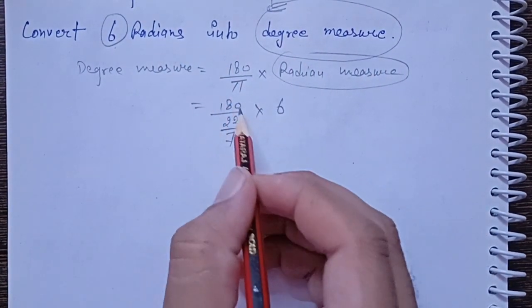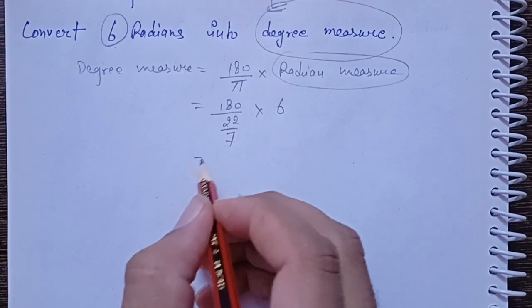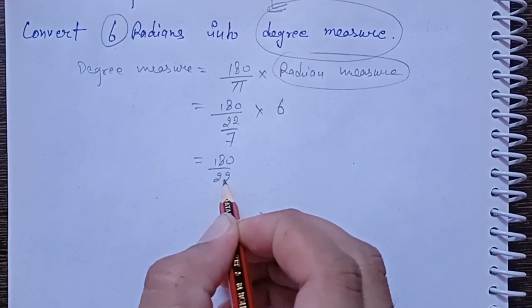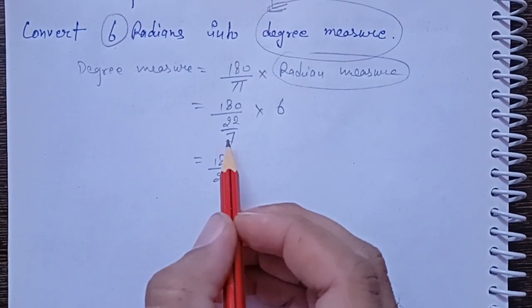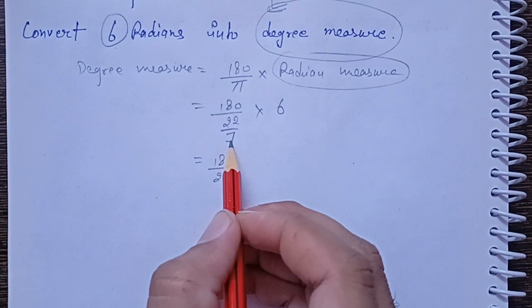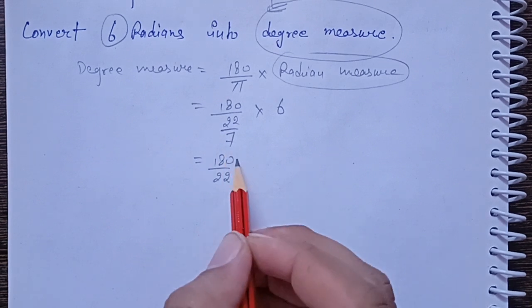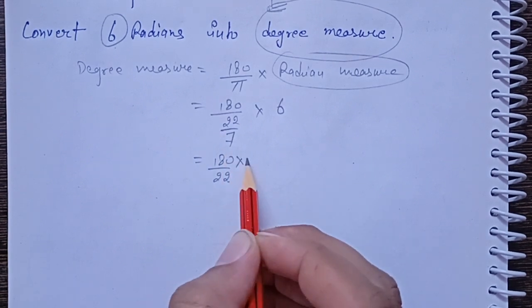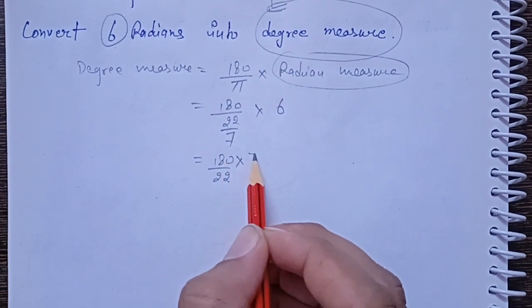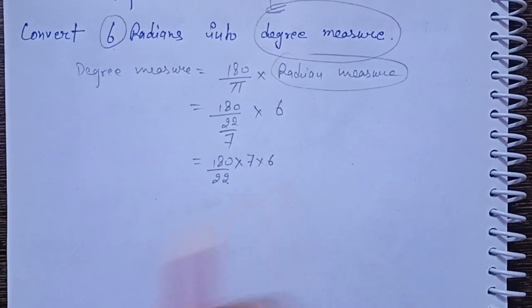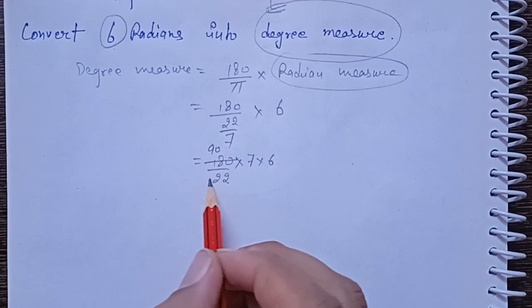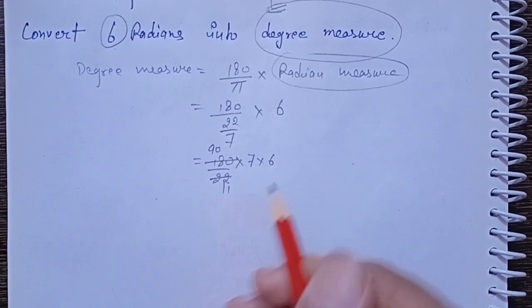Solve these. 180 divided by 22, with 7 in the denominator moved to multiply above, into 6. This simplifies to 90 over 11.